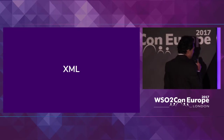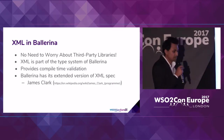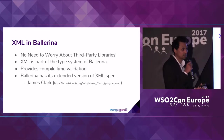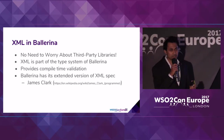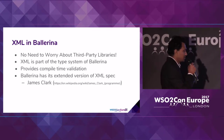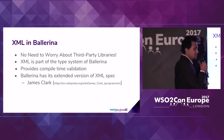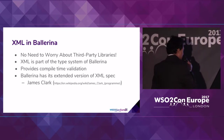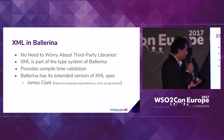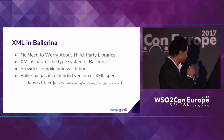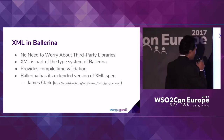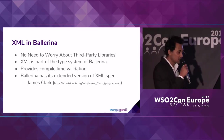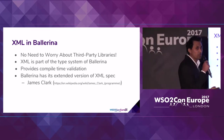So if you look at XML in Ballerina, first thing is: no need to worry about third-party libraries. That's the major difference — because if you use Java, you definitely have to depend on some third-party library. But in Ballerina, you don't have to do that, because XML is a part of the type system of Ballerina. It also provides compile-time validation, in the sense that you don't have to wait until runtime to figure out that your XML is not well-formed.